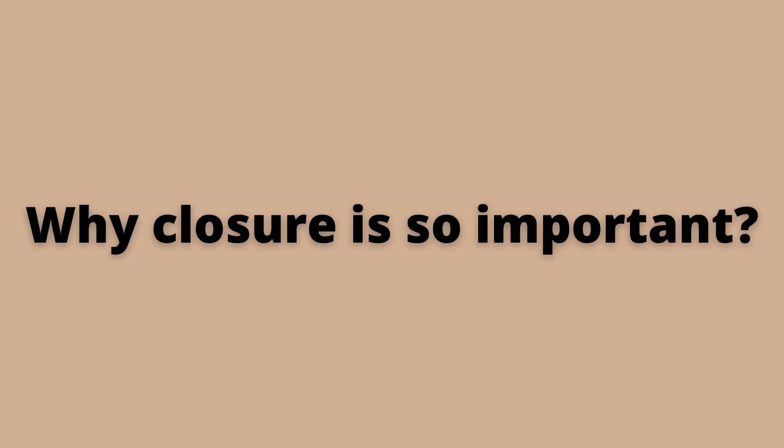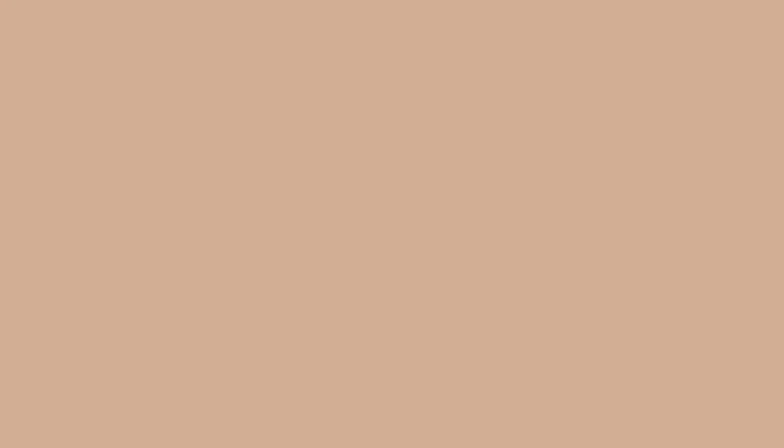Now why is closure so important? Take this for an example. Here I'm having a website where I'm calculating the number of likes that the website has received from a user. To do that I have a function called handle like, where I'm incrementing the like count every time the user clicks on the like button.